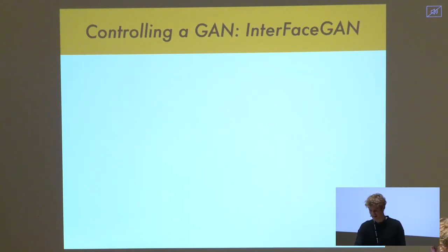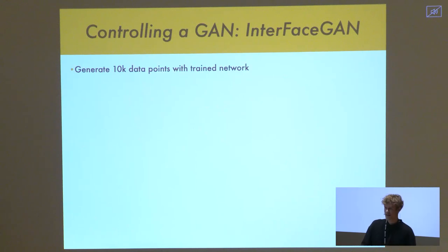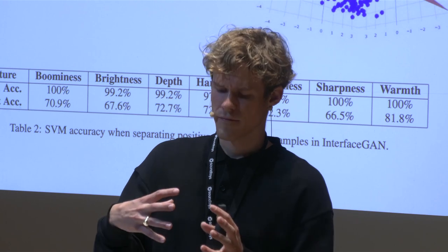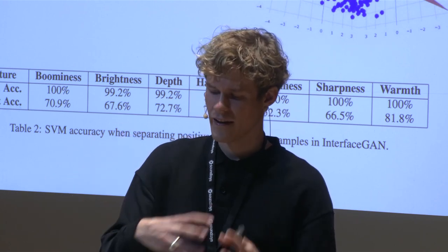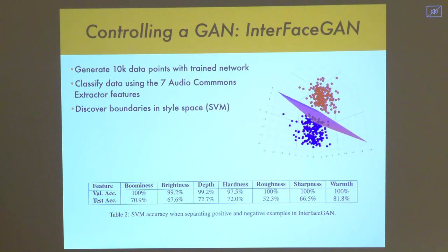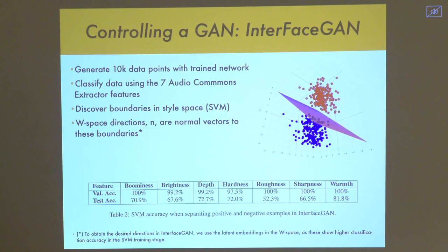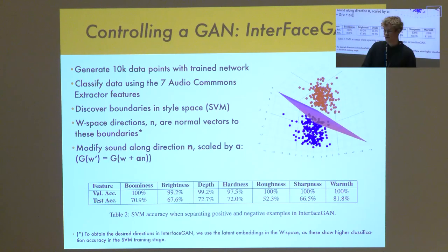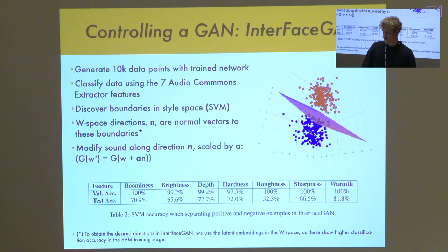InterFaceGAN is the supervised approach. The way you deduce directions is by classifying data: we generated 10,000 data points — sounds with the trained network — and then classified them using seven AudioCommons extractor features. This gives us a mapping within the style space of where all those classifications live within the latent space. Using a support vector machine, we discover boundaries in that space, and as per the InterFaceGAN literature, we extract dimensions by finding the normal vectors to these boundaries. We can then step along these direction vectors with a scalar amount of modification in the style space.